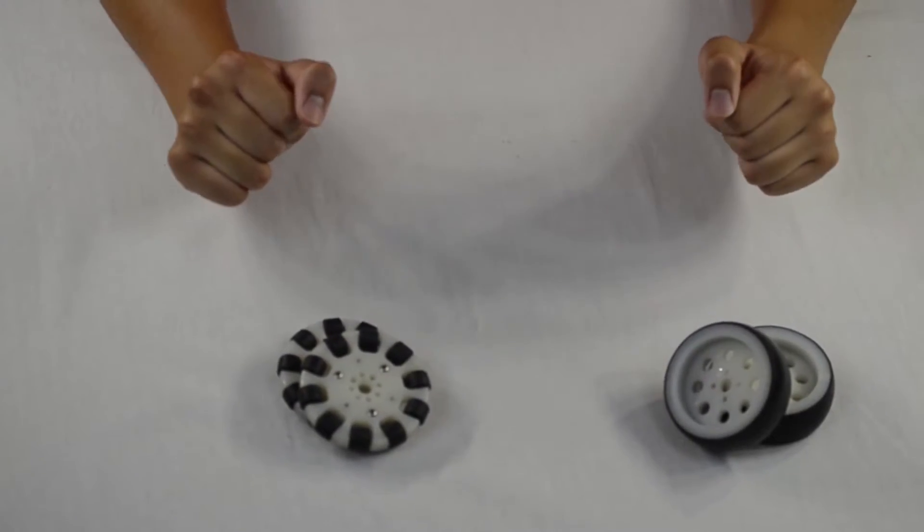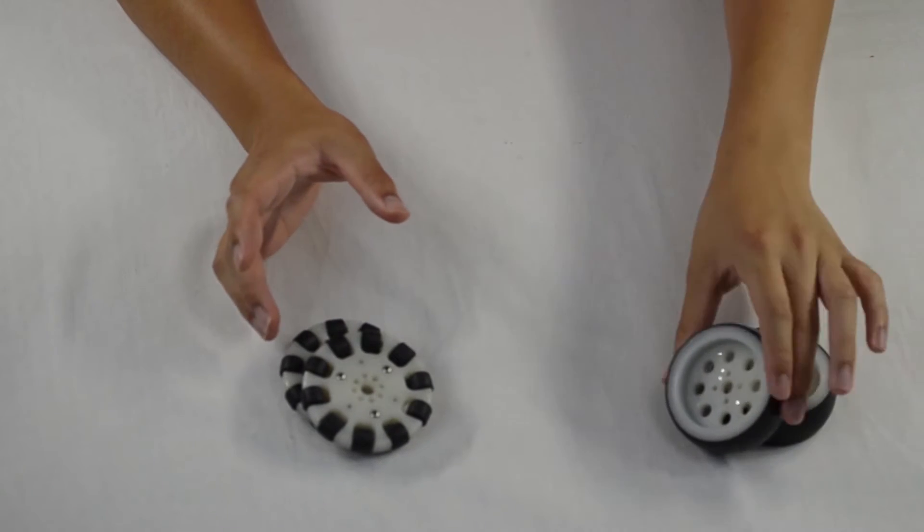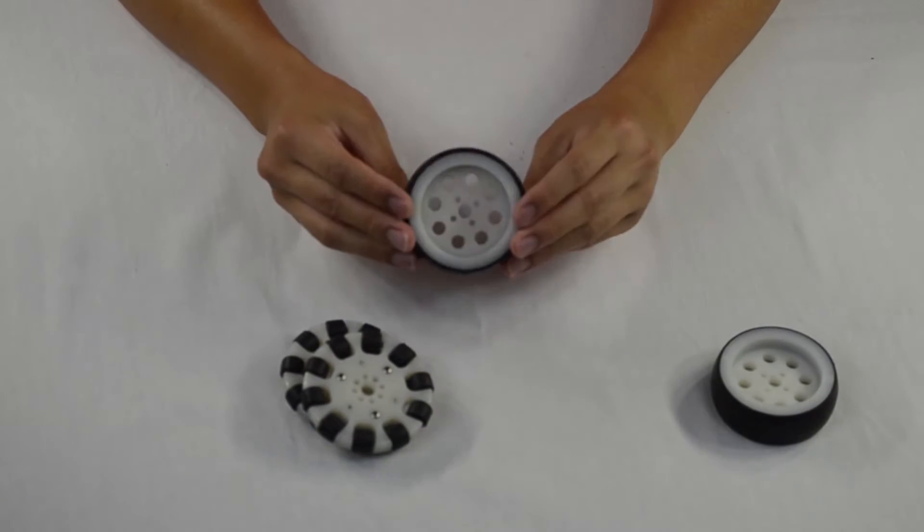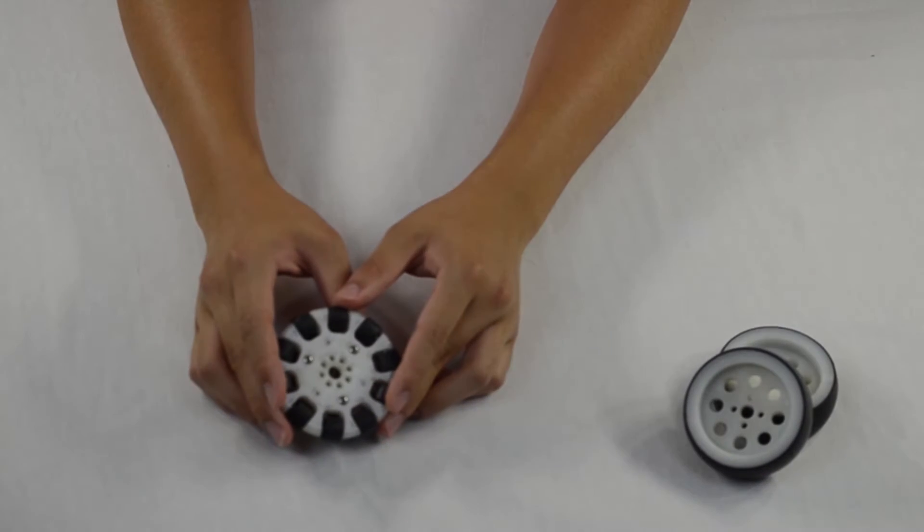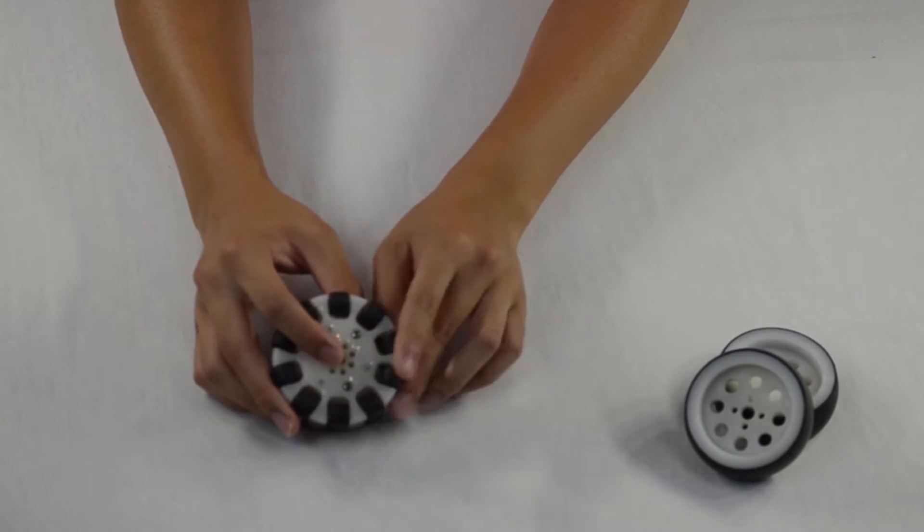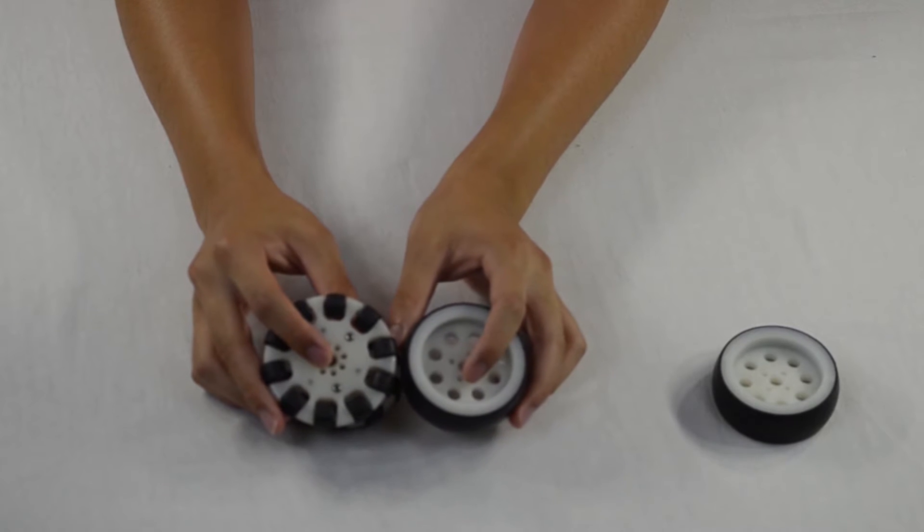Okay, so now we're going to go over the wheels. You have two different types of wheels. You have your regular rubber wheel which is three inches in diameter, and then you have a more special omnidirectional wheel which has a regular wheel base with the plastic around it.